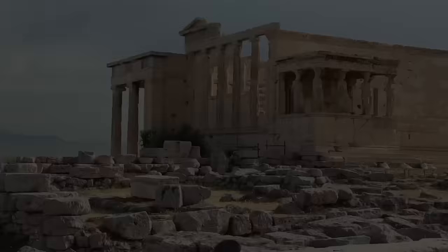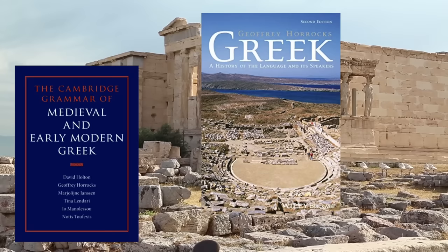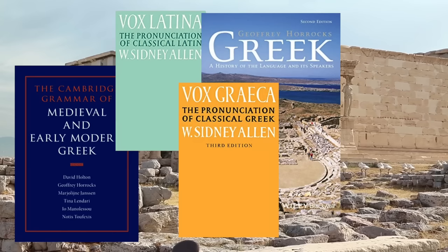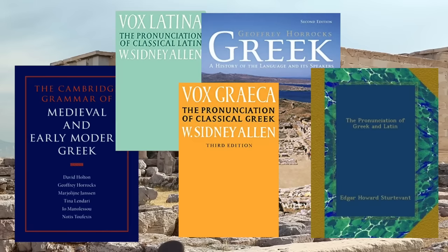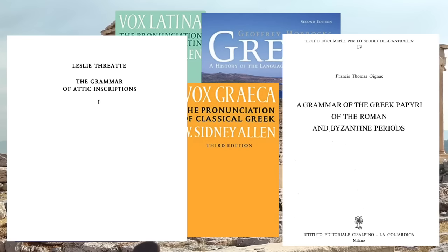Some of my sources include Greek: A History of the Language and Its Speakers by Horrocks; Medieval and Early Modern Greek by Holton, Horrocks et al.; Vox Graica and Vox Latina by Allen; The Pronunciation of Greek and Latin by Sturdivant. In the description you'll find links to these books on Amazon. Also worthy of consultation: Threet, the grammar of Attic inscriptions, and Gignac, a grammar of the Greek papyri of the Roman and Byzantine periods.